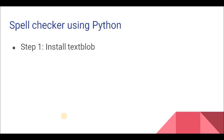To create a spell checker using Python, first we will install the library TextBlob. This is the name of the library we are going to use. To install it, we need the command pip install — so you have to write 'pip install textblob'. That is the name of the library: textblob.